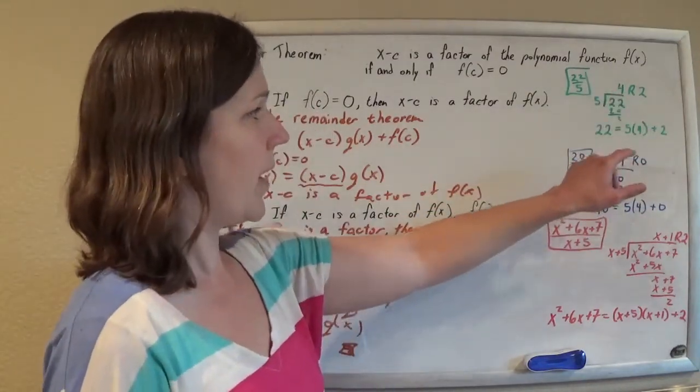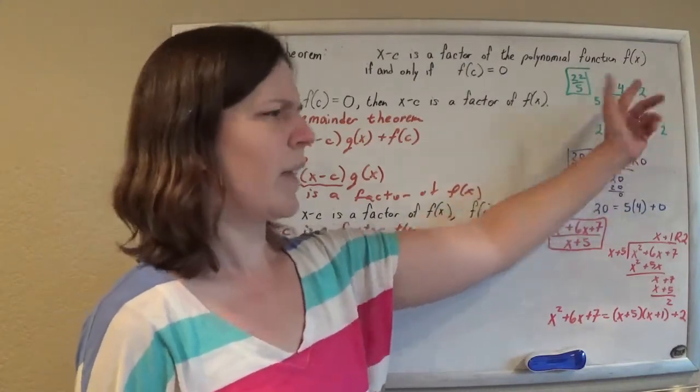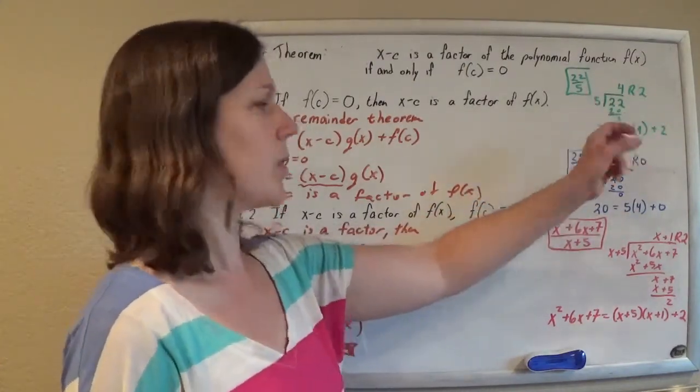We're good with that. And clearly we would say that 5 isn't a factor of 22 because you had that remainder, right? So it doesn't go in perfectly.